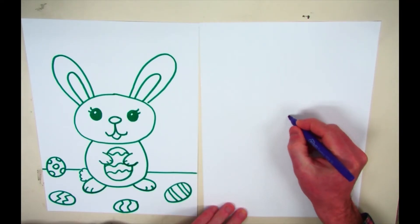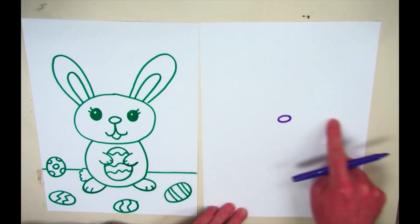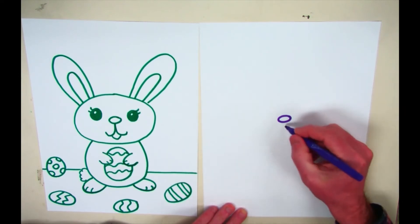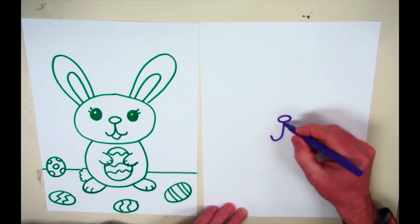First thing you'll want to do is draw in the nose. The J coming off of the nose and then another J, but backwards beside it.